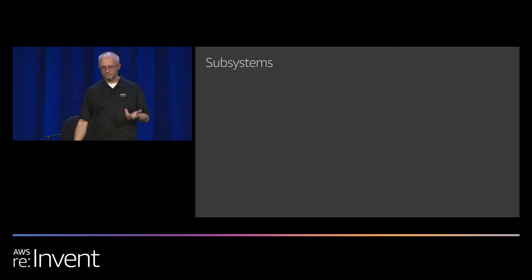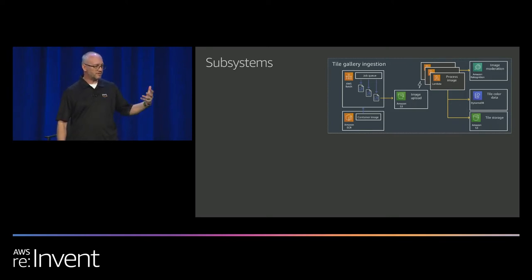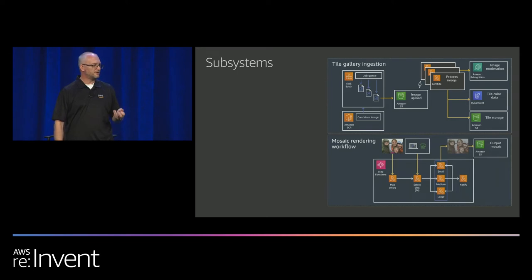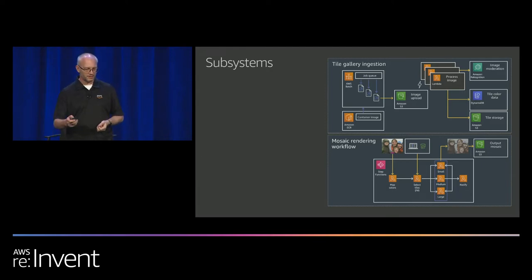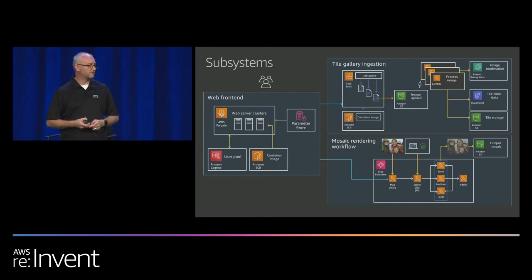Very briefly, Cloud Mosaic consists of three primary subsystems. We have a tile gallery ingestion system that uses Batch and Lambda to process incoming tile galleries and create tiles from them. Then we have a mosaic rendering workflow that uses AWS Step Functions with a number of Lambda functions in sequence. That's all tied together by a web application front end hosted on AWS Fargate. It uses Amazon Cognito for end user authentication, pulling container images from ECR, and Parameter Store from Systems Manager for runtime configuration.